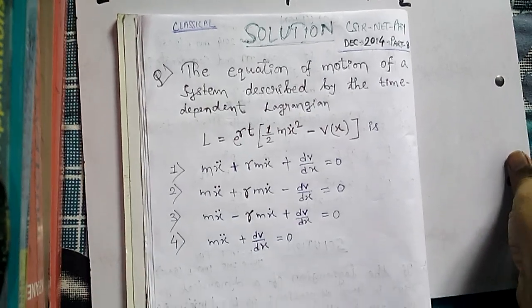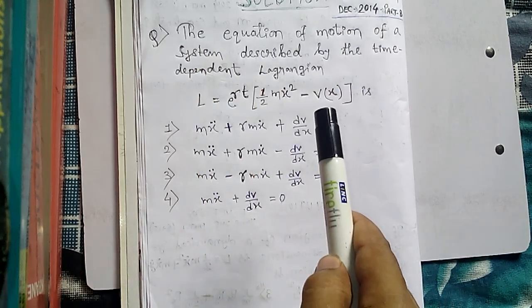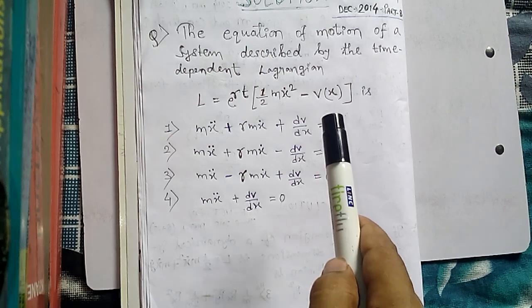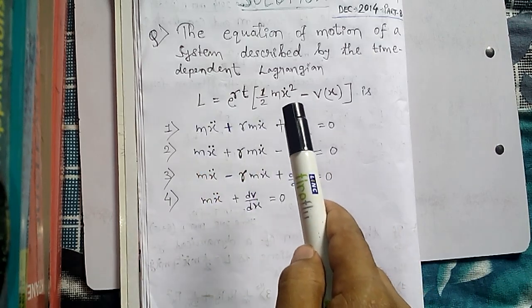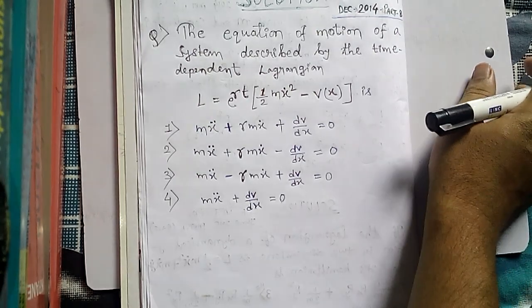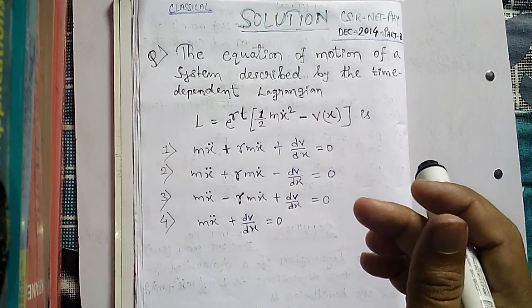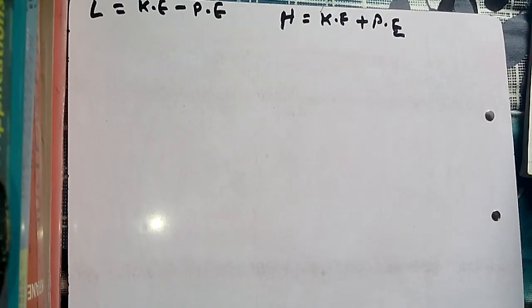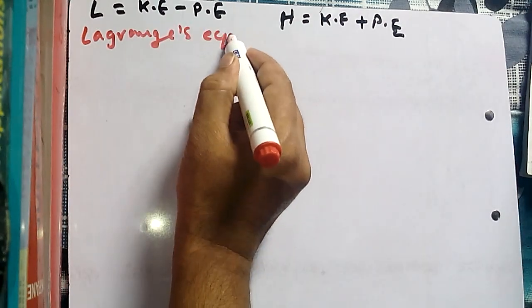Our problem demands the equation of motion given this Lagrangian. Whenever you are given a time-dependent Lagrangian and asked to find the equation of motion, we write down the Lagrangian equation, put the value of L inside it, and see what the equation finally turns out to be. So let us write down the Lagrangian equation.